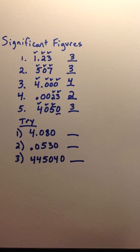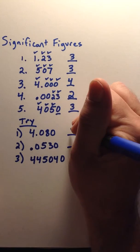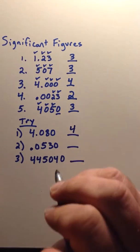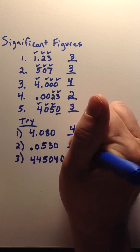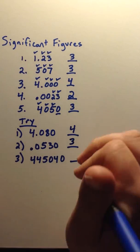Okay, we'll give you a second. This one should have four significant figures. This one should have three. And the last one should have five.